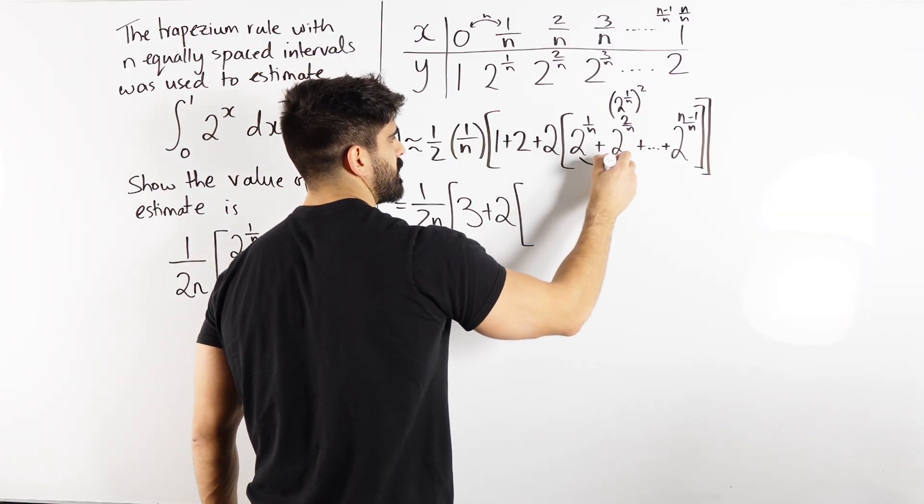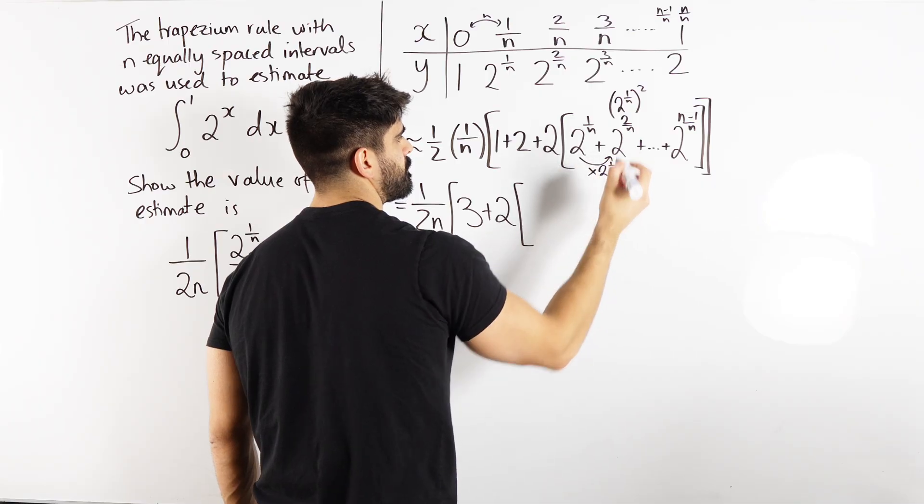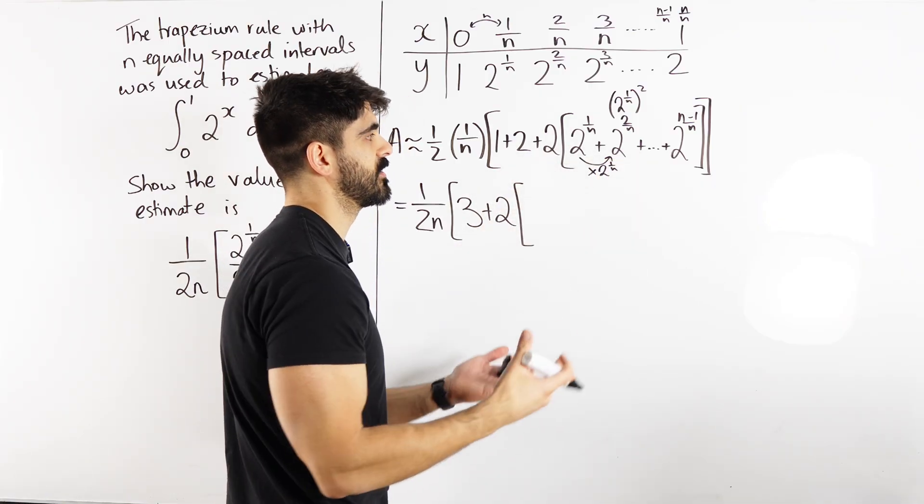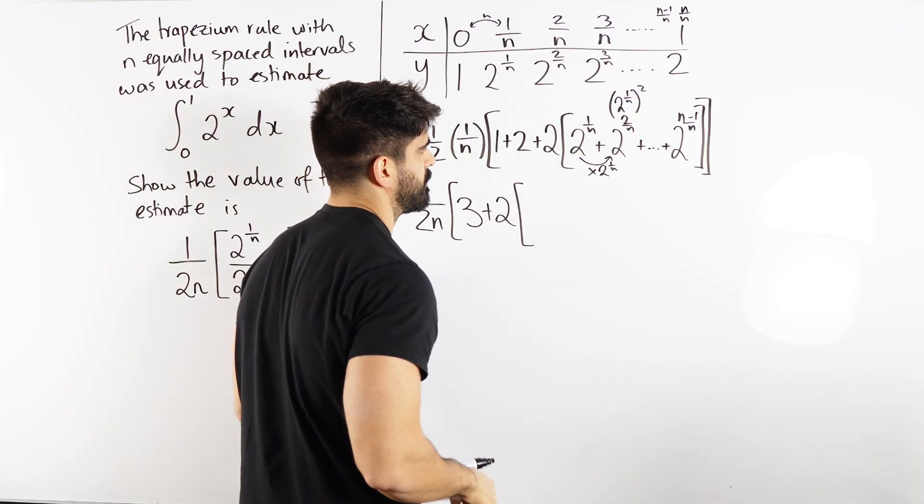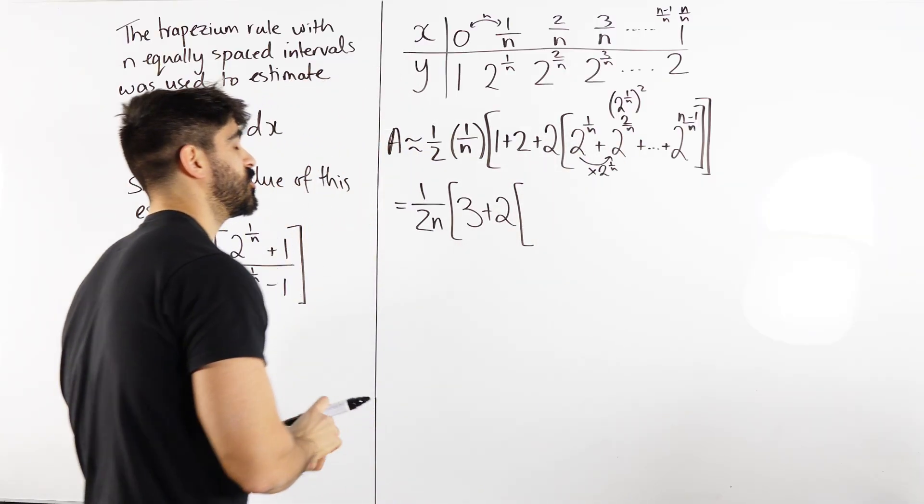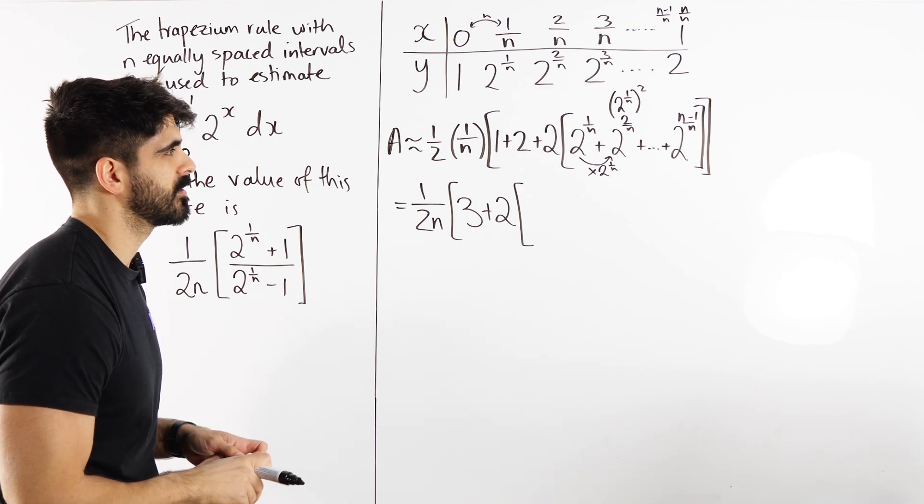Because you're essentially, you can think of it as well, you're adding the powers. So 1 over n plus 1 over n is 2 over n. So this is a geometric sequence. But we have to be careful about how many terms there are here.